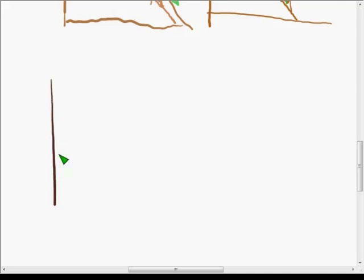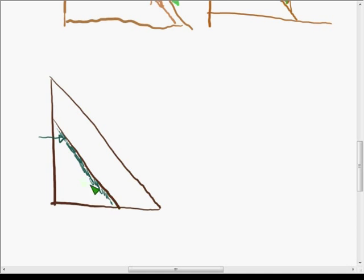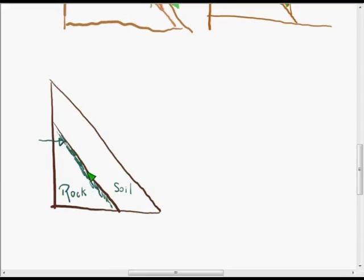Slumping is quite interesting because usually it involves again a pretty steep slope but it also involves thicker soil and almost always you need a source of moisture. Perhaps coming in here from the side there would be a layer of rock or between two layers of rock, and that moisture would accumulate along the boundary between the soil and the rock.